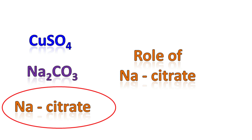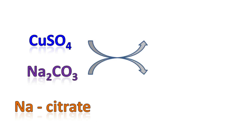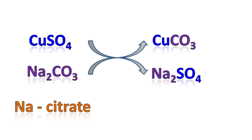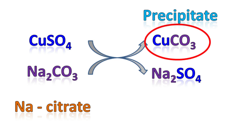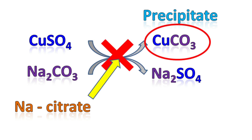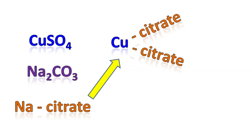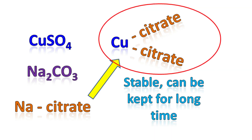Let's see the role of sodium citrate. Copper sulfate and sodium carbonate can react with each other to form a precipitate of copper carbonate. Sodium citrate prevents this reaction by reacting with copper and forming a copper citrate complex, which is very stable and has a long shelf life.